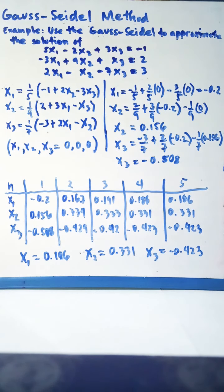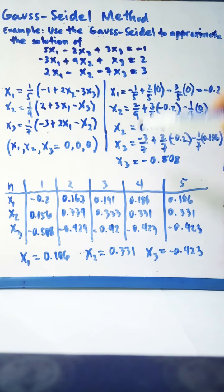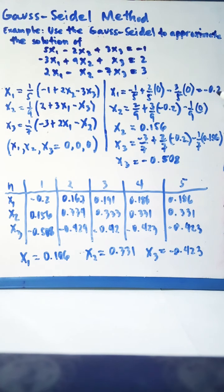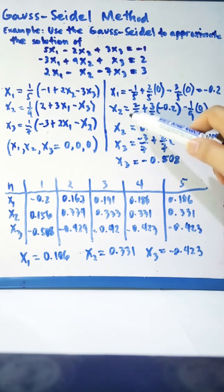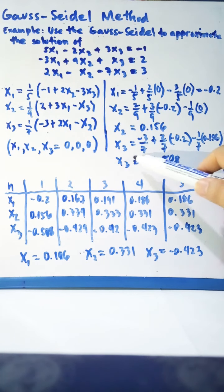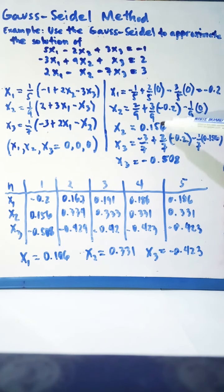The Gauss-Seidel method is almost similar to Jacobi because it is just a modification of it. The only difference is that in Gauss-Seidel, when finding x₂, we immediately use the newly computed value of x₁ rather than 0, and when finding x₃, we use the newly computed values of both x₁ and x₂. This causes faster convergence — Gauss-Seidel converged in 5 iterations versus 7 for Jacobi.